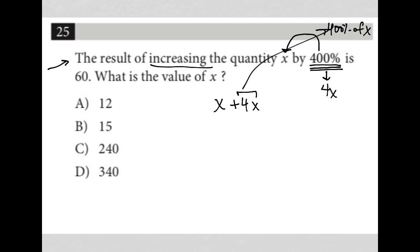So the result of increasing the quantity x by 400% or 400% of x is, which means equals, 60. There's our equation.